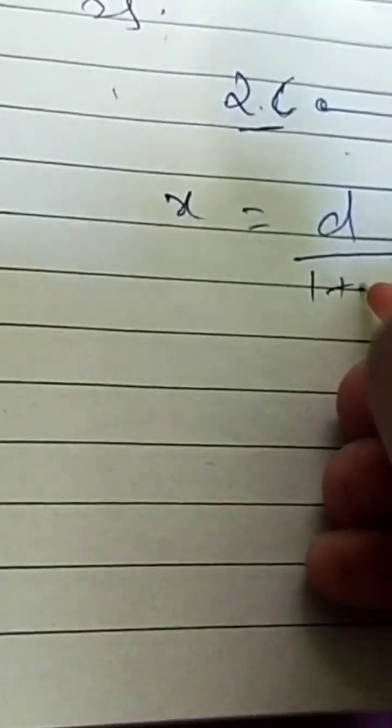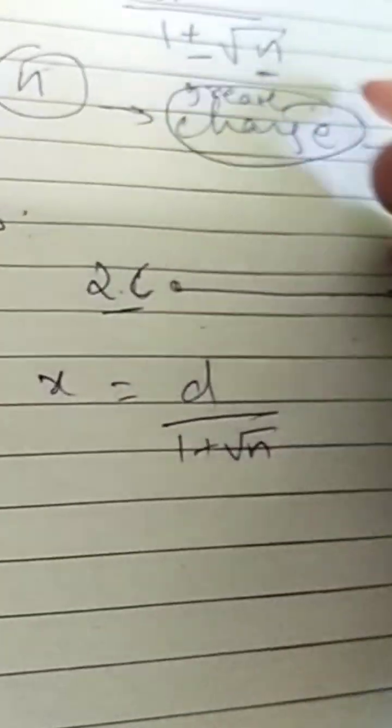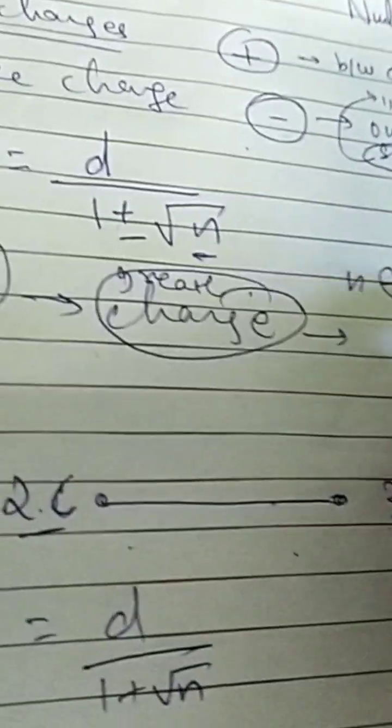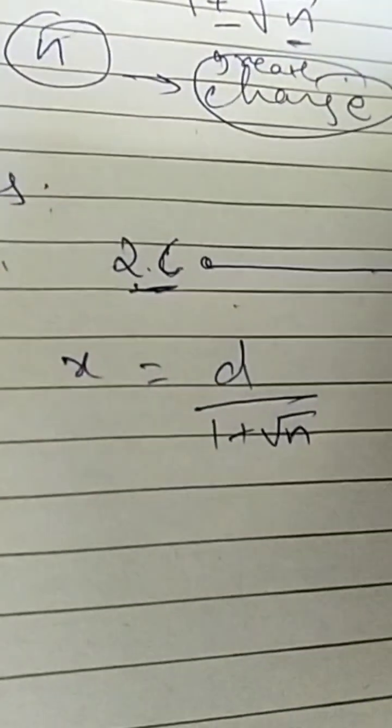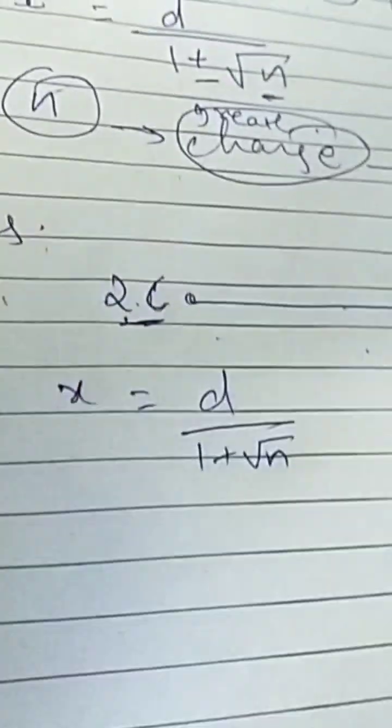So null point to calculate x is equal to d by 1 plus n and must belong to integer. Okay. So here is 2 and here, sorry, and must belong to integer but we can do by another method also.